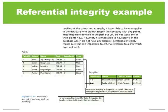Here is a worked example. If you look at the paint shop example, it is possible to have a supplier in the database who did not supply the company with paints — they may have done so in the past but they do not stock any of their paints now. However, it is impossible to have paints in the database which do not have any supplier. Referential integrity exists to make sure that it is impossible to enter a reference to a link which does not exist.